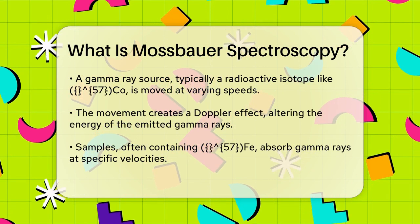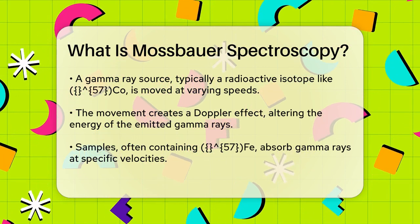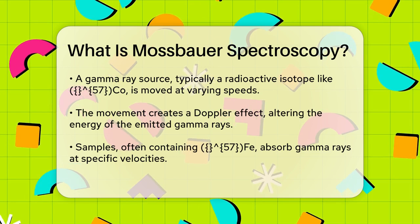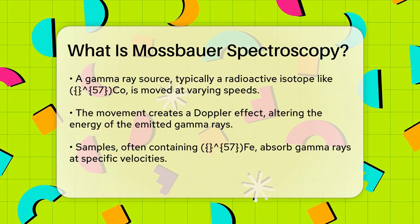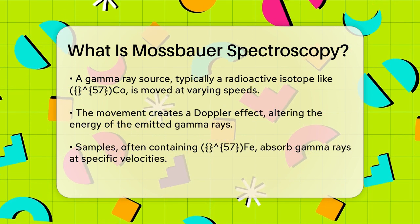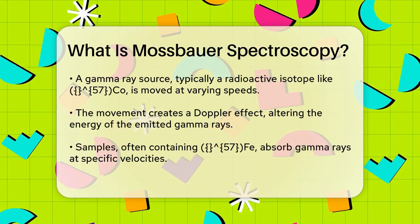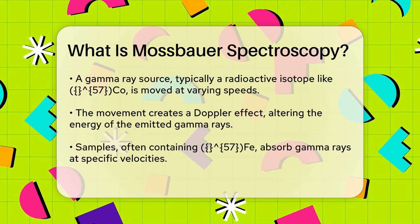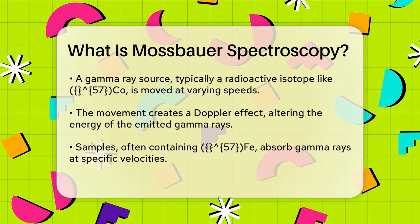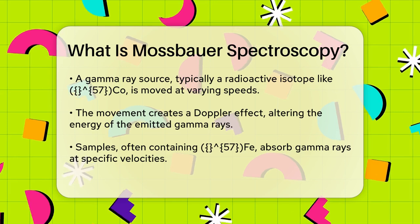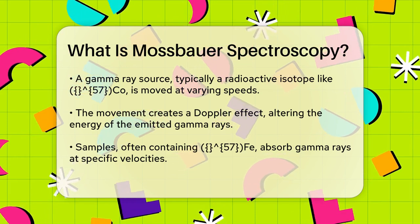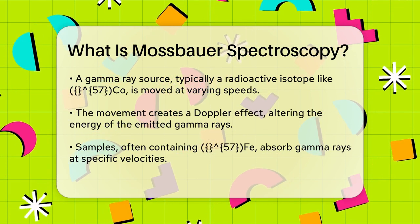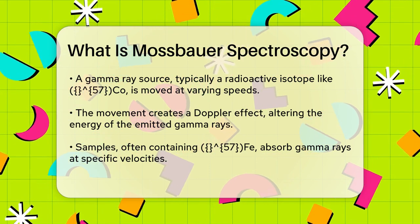During the process, a source of gamma rays — often containing a radioactive isotope like 57Co — is moved at different velocities using a linear motor. This movement creates a Doppler effect, which changes the energy of the gamma rays. The sample, usually containing 57Fe, absorbs these gamma rays at specific velocities, and this absorption is measured. The resulting spectrum shows dips or peaks where the gamma rays are absorbed, which tells us a lot about the chemical environment of the nuclei in the sample.